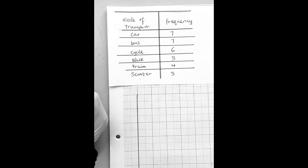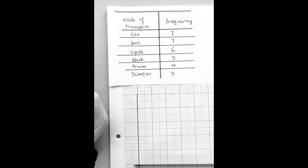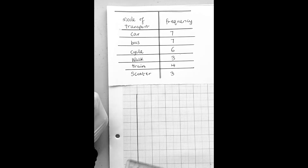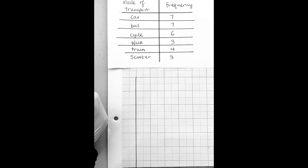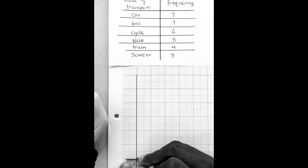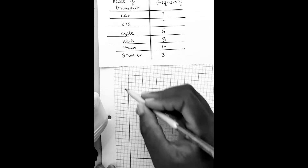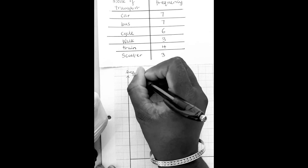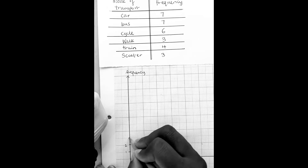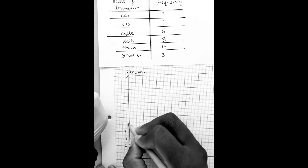I need to decide how I want to go up on the scale - maybe one, two, three, four, five, six, seven. I'm going to have my data on the x-axis and my frequency on the y-axis. I'll label this side as my frequency, counting up one, two, three, four, five, six, seven.